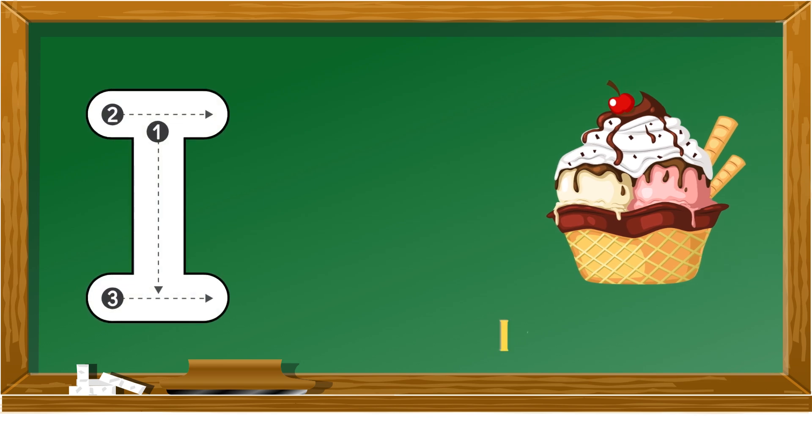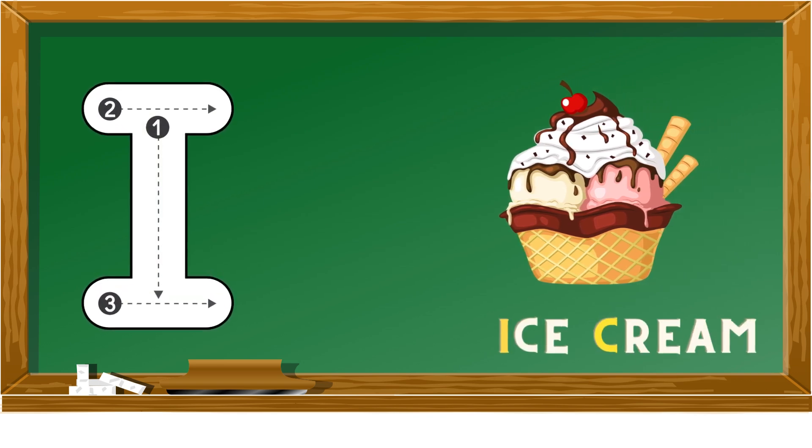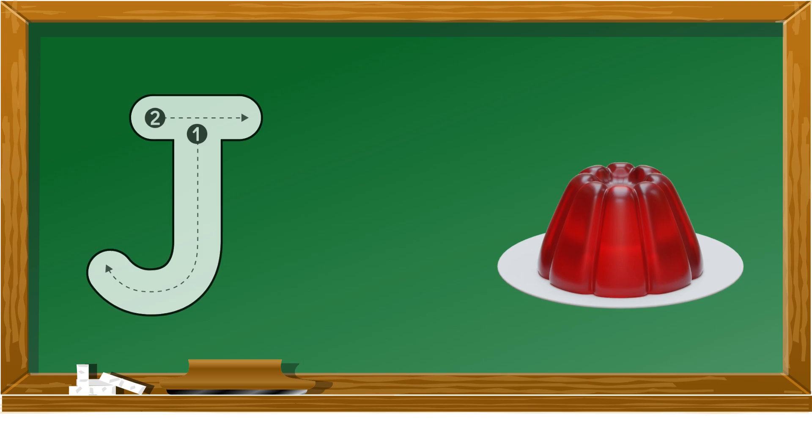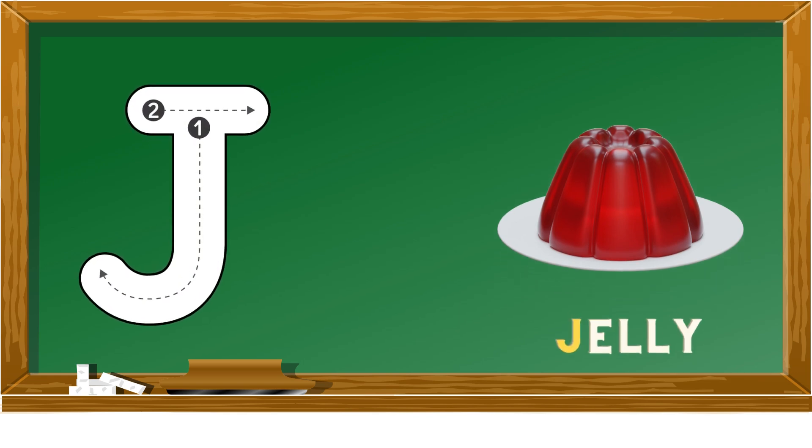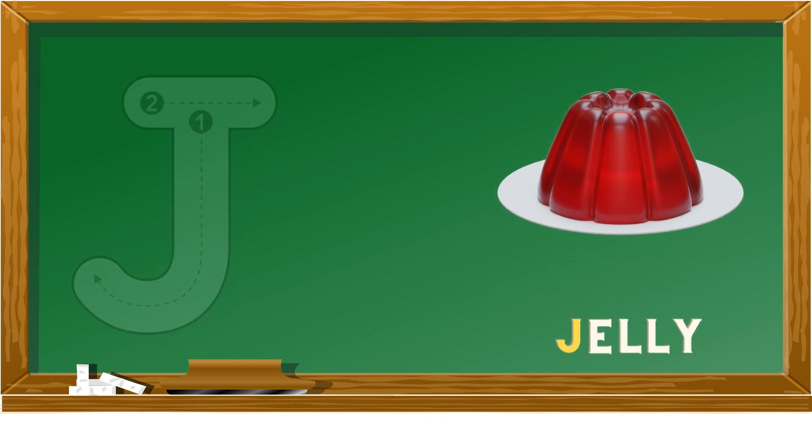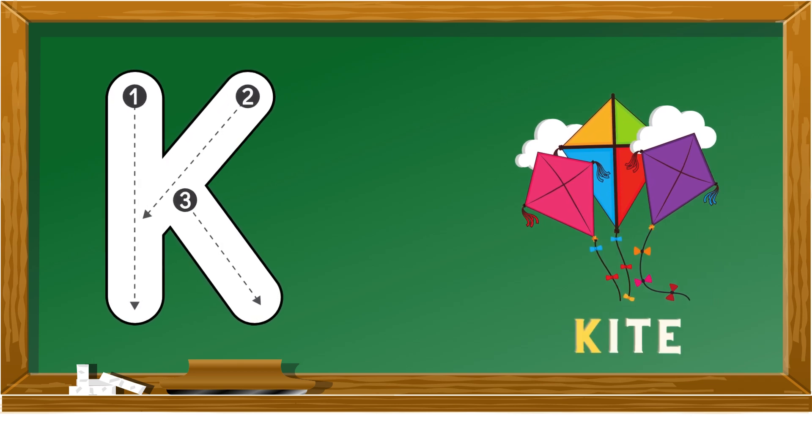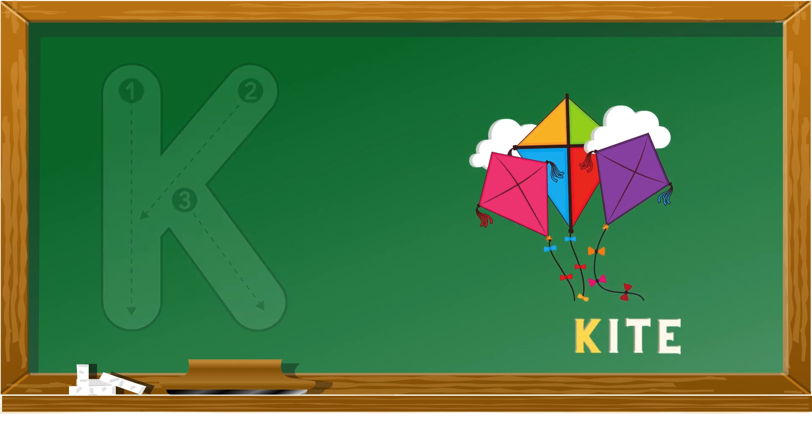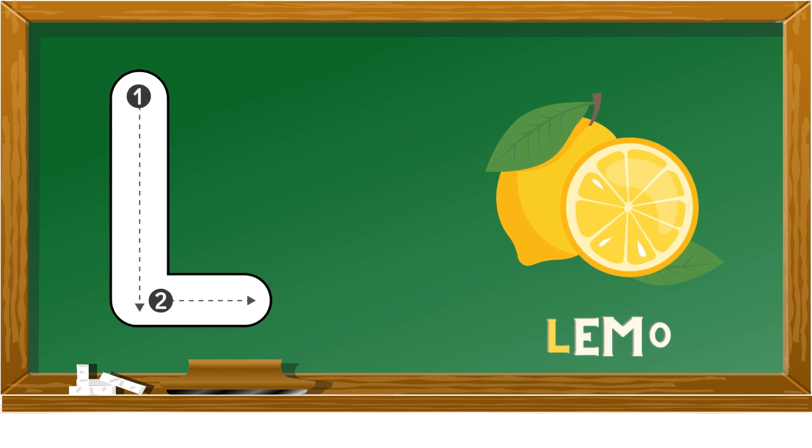I is for ice cream, J is for jelly, K is for kite, L is for lemon.